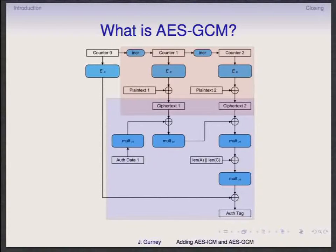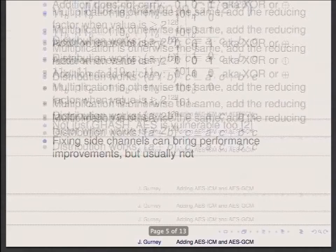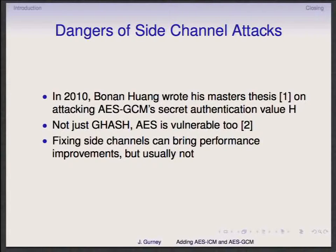Once you figure out H, as we saw in the diagram, if you know H you can actually forge any message that you want. His paper was attacking purely the Galois field math and not the AES side channel, but there are also well-known side channel attacks for the standard S-table version of AES, because the S-Box lookup is most often implemented as a 256-byte array. Luckily, if you have access to SSE registers there are other things you can do to mitigate that, assuming you don't have AES-NI.